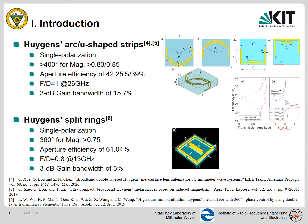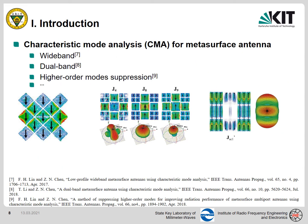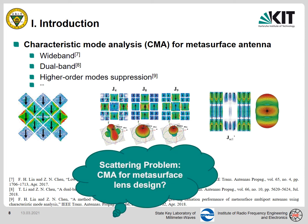Until now, we have two techniques to realize the dual-layer metasurface lens based on a single substrate layer. But how to propose such a structure and what really happens in the unit cell are still unclear. Characteristic mode analysis has been used for metasurface antenna design, including wideband, dual-band, and higher-order mode designs. These designs are all radiation problems. As you know, CMA is also very powerful for scattering problems. So in this work, we will show you how to use CMA for metasurface lens design.